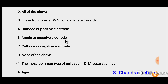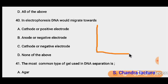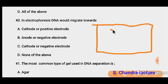Question 40: In electrophoresis, DNA would migrate towards. DNA is a negatively charged particle. When DNA is made to move in an electric field, it moves towards the positive electrode (anode). So DNA migrates towards the cathode side — towards the positive electrode inside the gel.